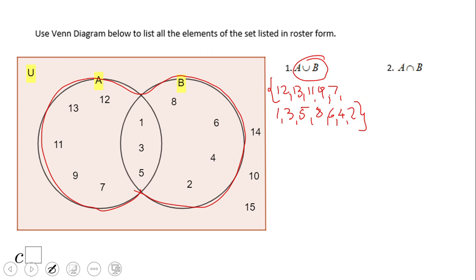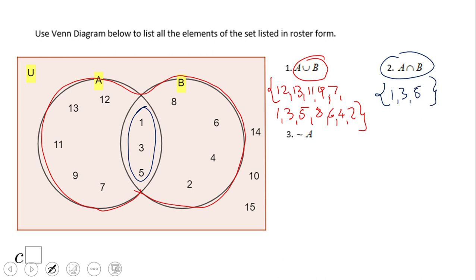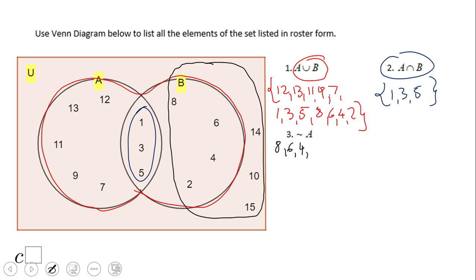Now we have intersection — what do they have in common? This is very easy with a Venn diagram: 1, 3, and 5. Then here we have the complement of A. The complement of A, if you remember, is the elements that are not in A but are in the universal set. These are the elements: 8, 6, 4, 2, 14, 10, 15.